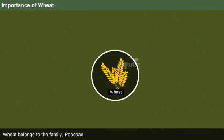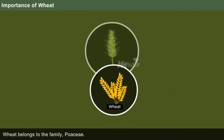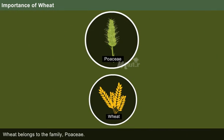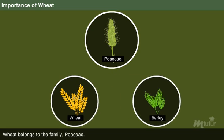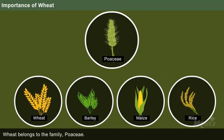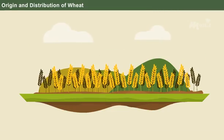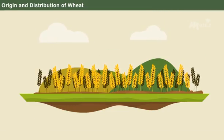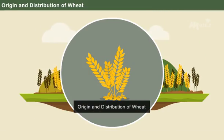Wheat belongs to the family Poaceae, which includes major crop plants such as wheat, barley, maize, rice, etc. Now let us discuss the origin and distribution of wheat.